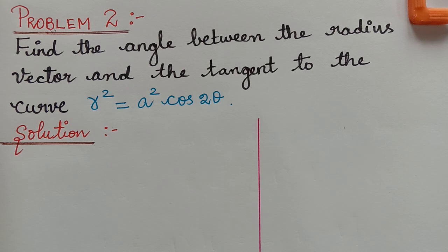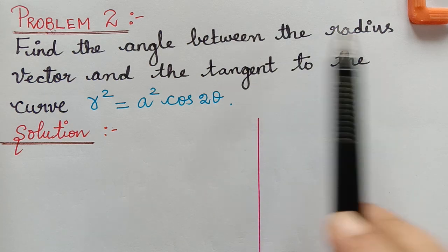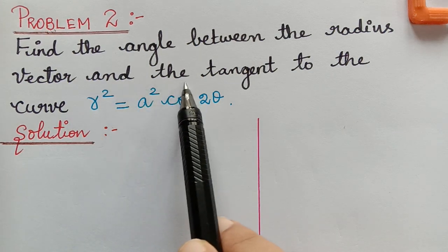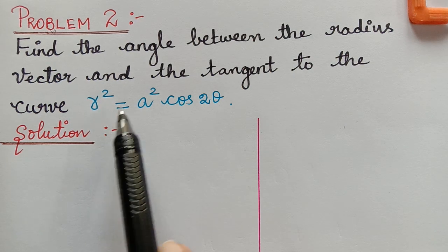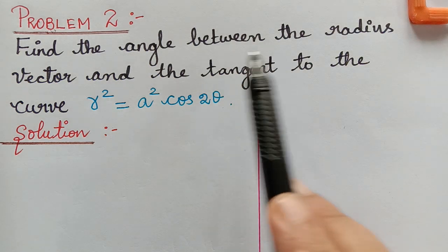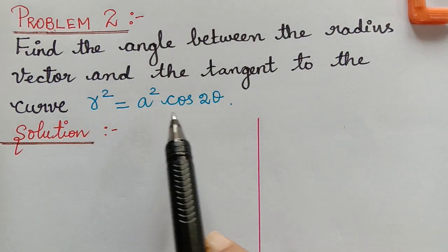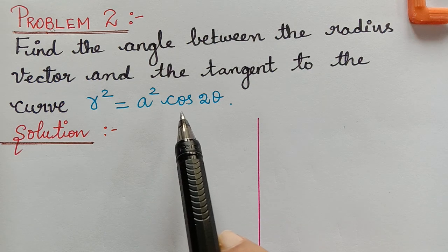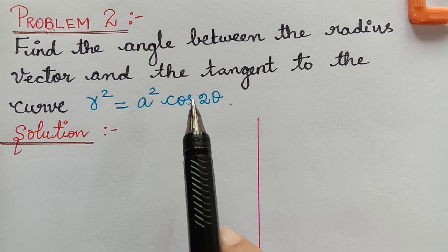Dear students, under the topic polar coordinates, here we have the second problem. The question is to find the angle between the radius vector and the tangent to the curve r² = a²cos2θ. The angle between the radius vector and the tangent is given by tan φ, which is equal to r multiplied with dθ/dr.